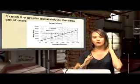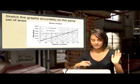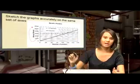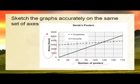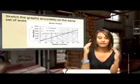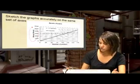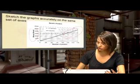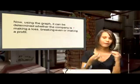On the graph, the x-axis shows the number of posters and the y-axis shows money. Different lines represent income and expenses so you can differentiate between the two. When the expenses line is above the income line, the business is running at a loss; when they intersect, it's break-even; when expenses are below income, the business is making a profit — which we can see toward the end of the graph.